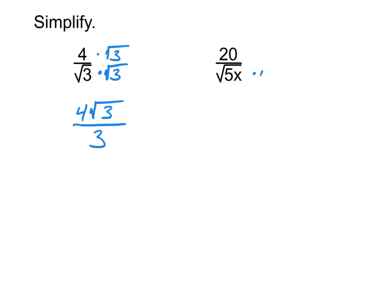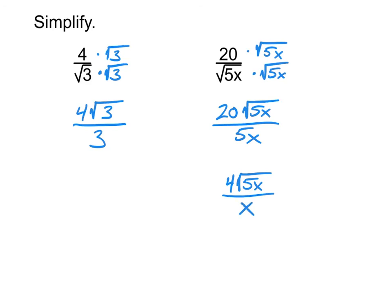On the second one, same basic idea there, where we're going to be multiplying both top and bottom by the square root of 5x. Now on the top, then we have 20 square root of 5x. And on the bottom, we have 5x. What do you notice about this fraction? Yep, it's reducible. And so always look to see how you can reduce it a little bit further. In this case, the 20 over 5 reduces. And so then this is going to become 4 times the square root of 5x all over just x. That would then be considered actually simplified.